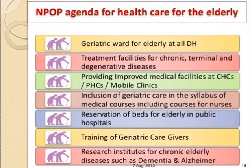The agenda for healthcare of the elderly under the National Policy includes establishment of geriatric wards in district hospitals, treatment facilities for chronic, terminal and degenerative diseases, provision of medical facilities at the community and center level, and provision of a mobile geriatric clinic. Further agenda includes inclusion of geriatric care in the syllabus of medical and nursing courses, training of geriatric caregivers, reservation of beds for elderly in public hospitals and research institutes for chronic elderly diseases like dementia and Alzheimer's disease.